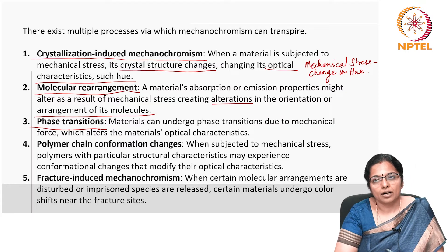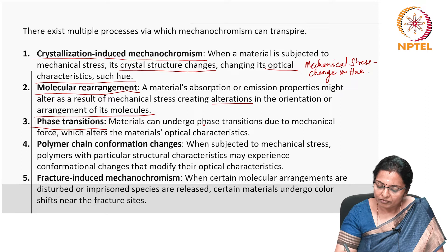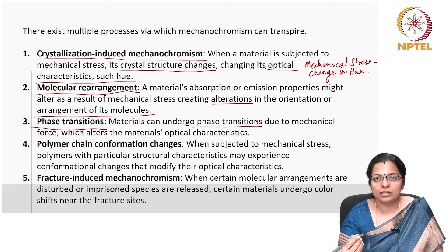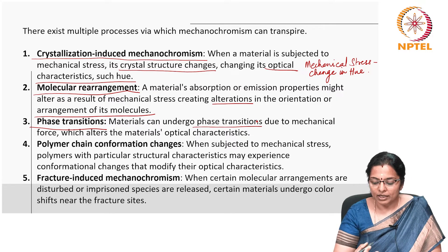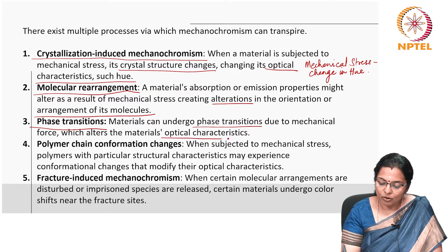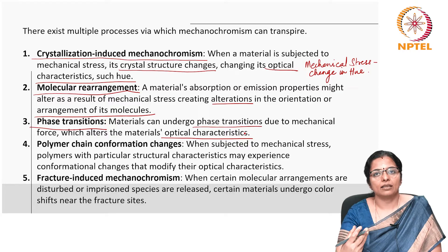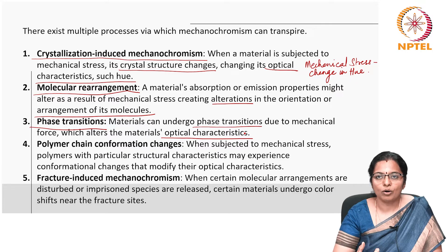The third is phase transitions. Materials can undergo phase transitions due to mechanical force, which alters the material's optical characteristics — for example, a transition from solid crystalline to liquid or vice versa. This can result in changes such as the material becoming transparent, translucent, or opaque.